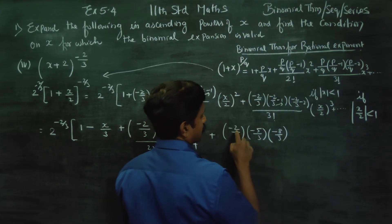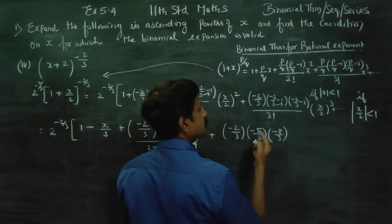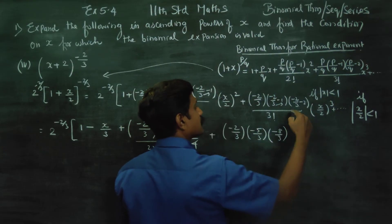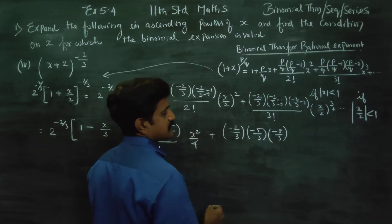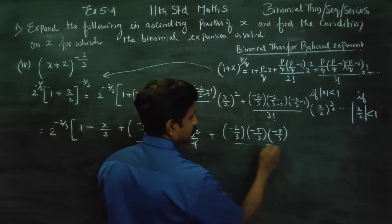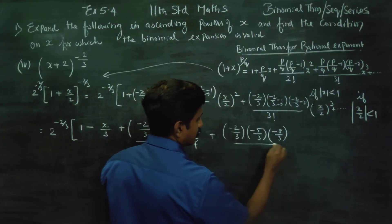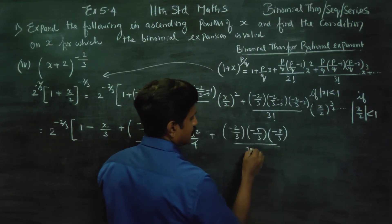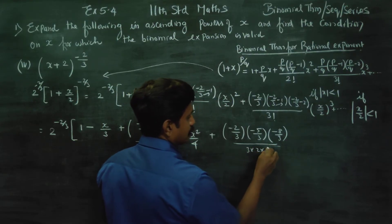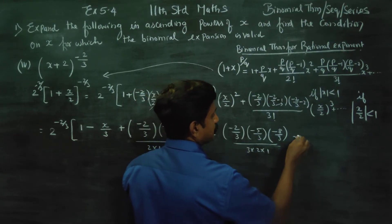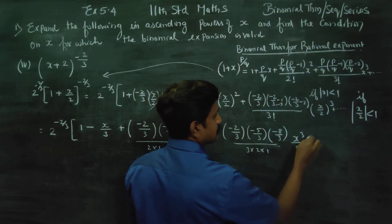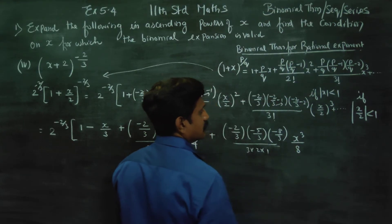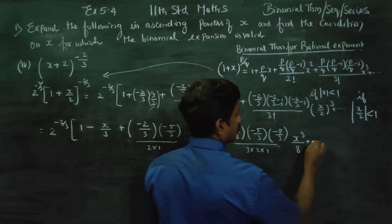Am I right? 3, 3 increase — I need 2, 5, 8. So cross: 6 minus 2 is minus 8 by 3, divided by 3 factorial, which is 3 into 2 into 1, times x cubed by 8, plus dot dot dot.